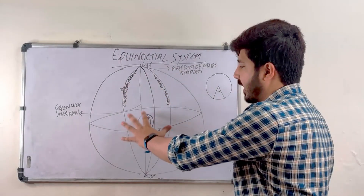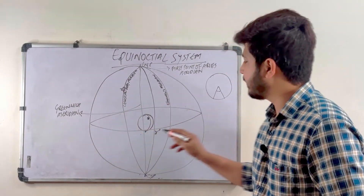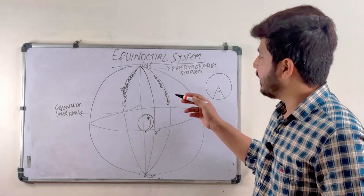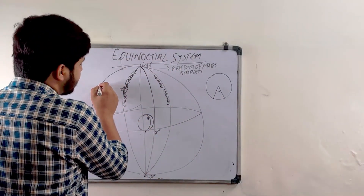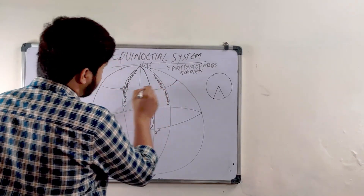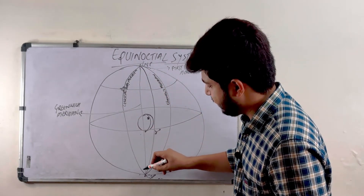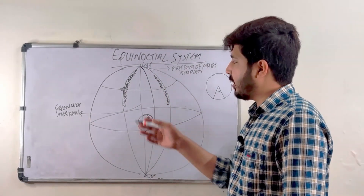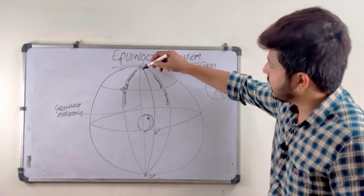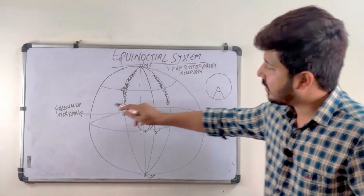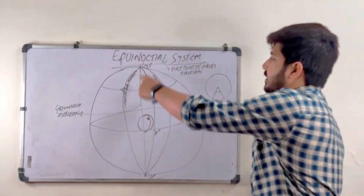I have drawn the celestial sphere already and I have drawn the earth at the center. This is the equinoctial — you already know. I have made one star here; this is a celestial body — it could be any star. This will be the declination circle for the star, and this is the meridian passing through this body. The longitude projections on the celestial sphere are not called longitude — these are called meridians. And this is obviously the Greenwich meridian — this is the celestial meridian of Greenwich.